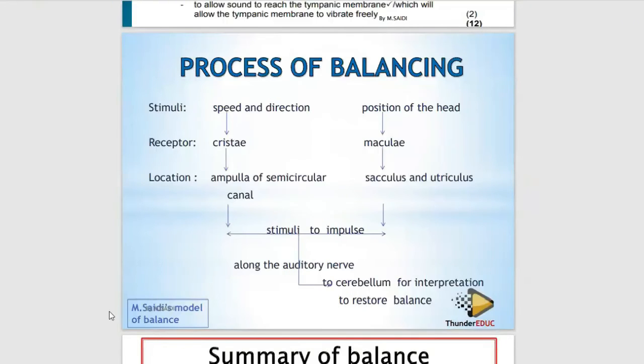You see, here is the Saeed's model of balance, whereby saying that change in the speed and direction. You see it is cristae found in the ampulla of the semicircular canal. The stimuli is converted into enough impulse, which is sent along the auditory nerve to cerebellum for interpretation to restore balance, meaning that sends back the muscles and then balance is being obtained. So basically, that's what you are supposed to explain. So it means that you are looking for this route.